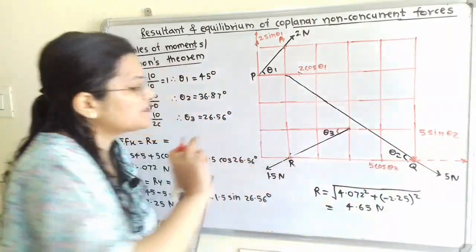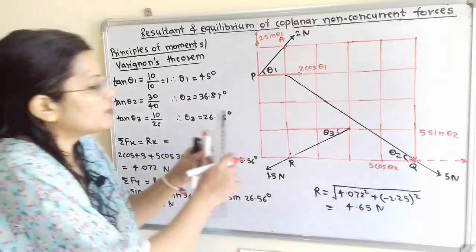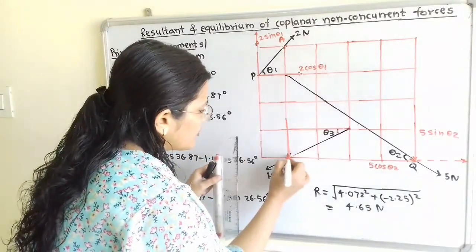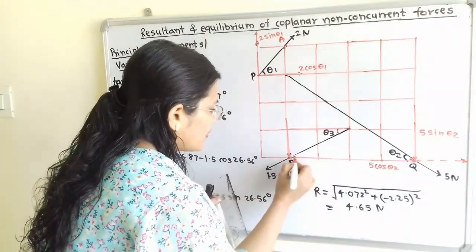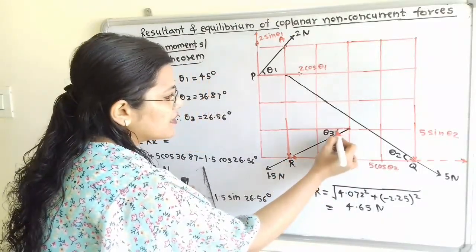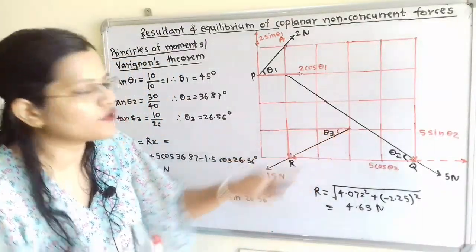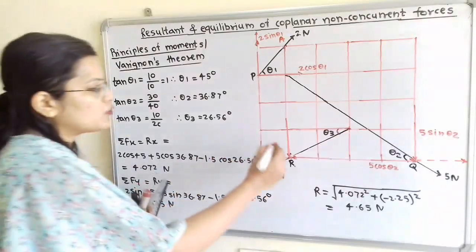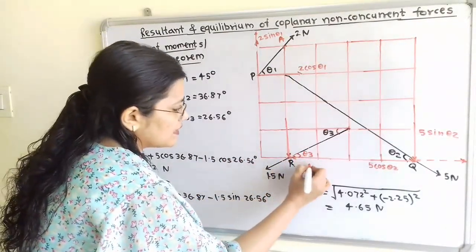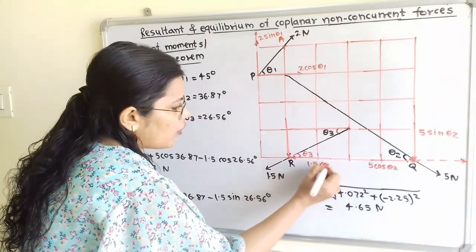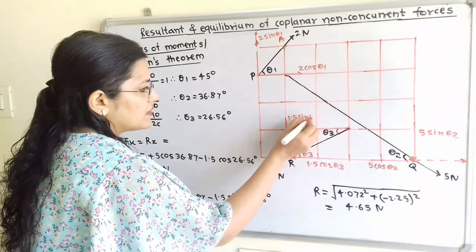For this 1.5N force, we resolve at point R into horizontal and vertical components. Here is the angle θ3 with the horizontal line. The horizontal component and horizontal line are parallel to each other, with the opposite angle θ3, so it is 1.5cos(θ3) and here is 1.5sin(θ3).